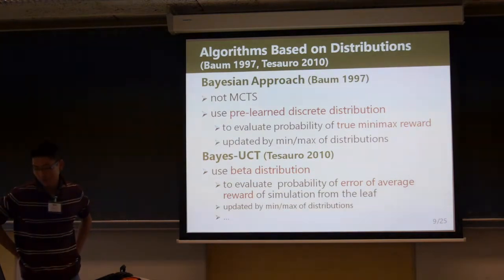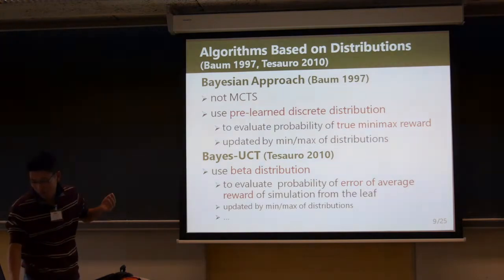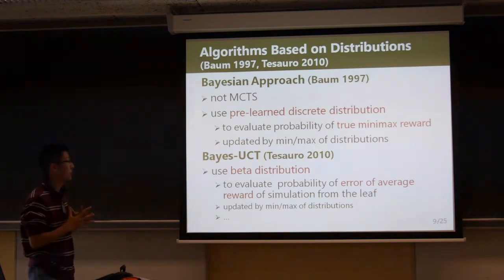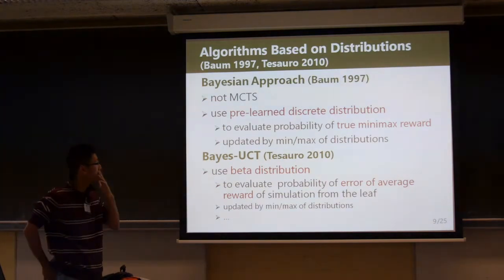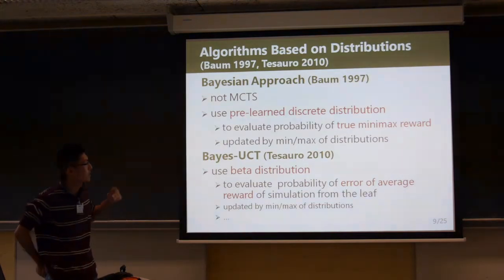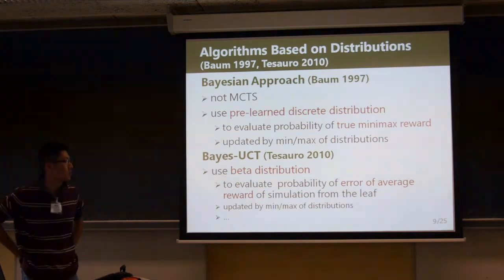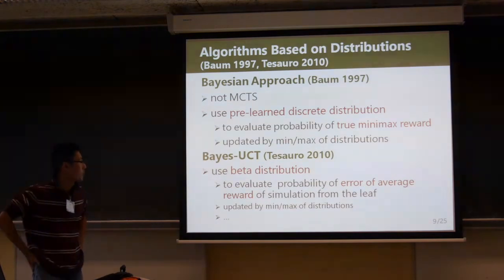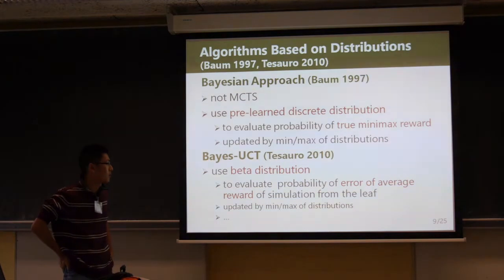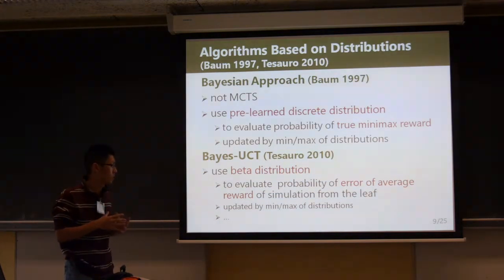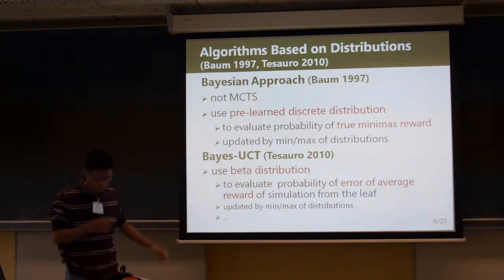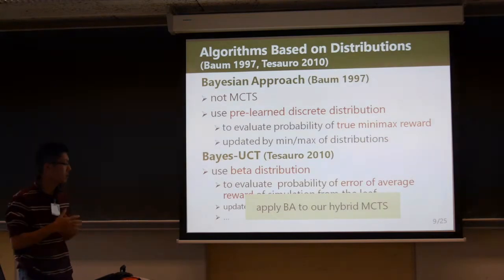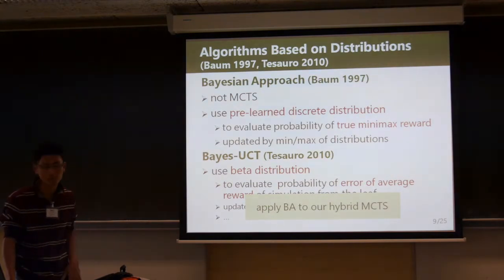There is an existing tree-search algorithm that uses distribution called the Bayesian approach and base UCT, abbreviated as BA. BA is not MCTS. It uses a multi-armed bandit with discrete distribution to evaluate the probability of the true minimax value, and updates by mean-max of the distribution. We apply BA to our hybrid MCTS because it provides a simpler distribution.